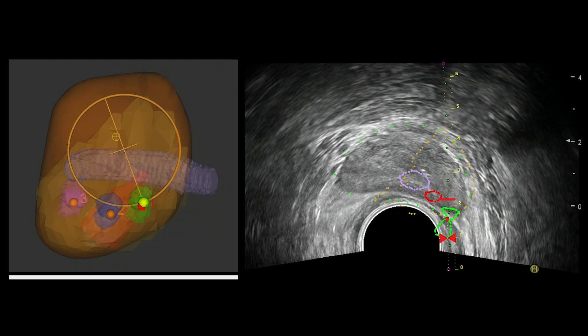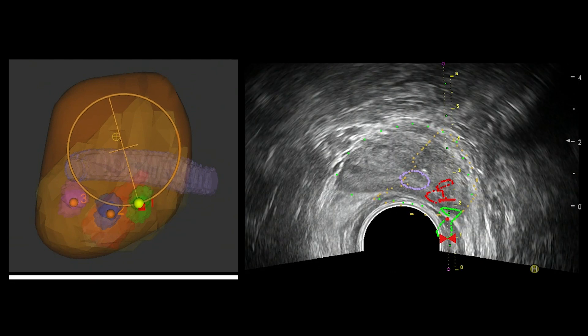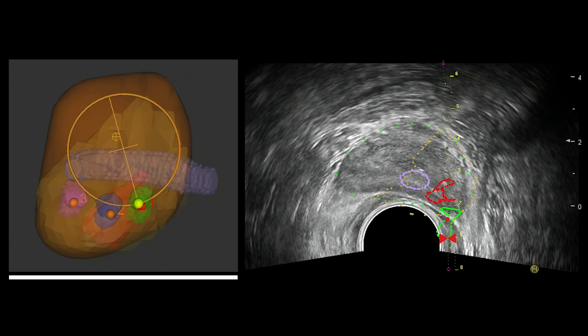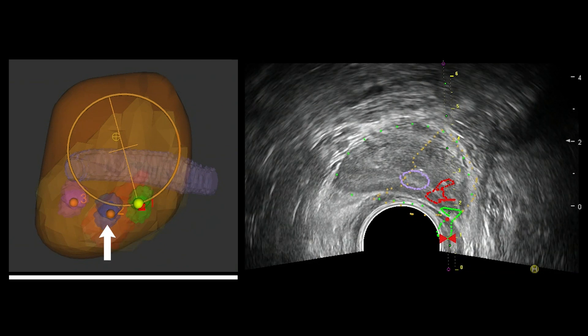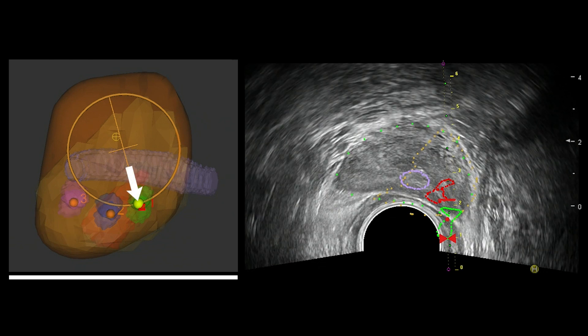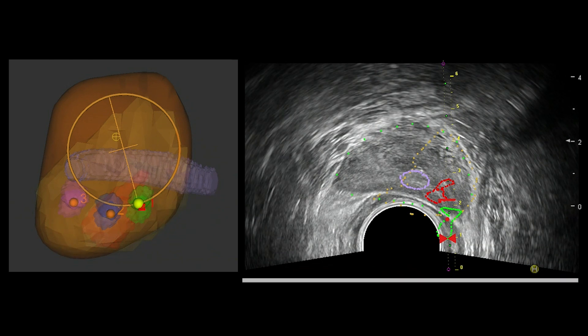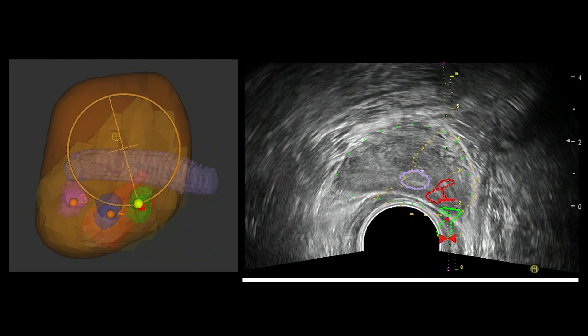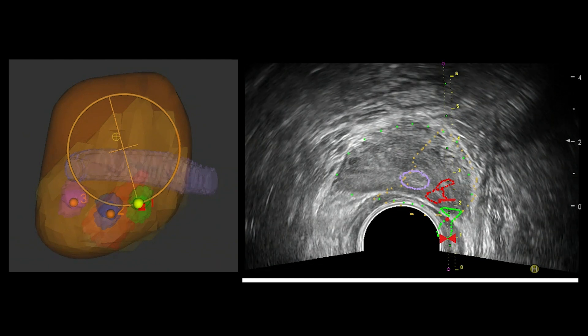On the left is a 3D model of the prostate with urethra in purple, ROI in red, and three planned ablations marked in green, blue, and pink. The yellow circle represents the orientation of the ultrasound probe relative to the prostate. On the right, this information is overlaid on the live 2D ultrasound image to guide the practitioner to the desired ablation site.